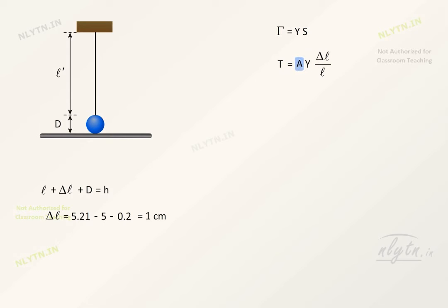Writing area of the cross section of the wire as pi r square and solving, we get the value of tension.